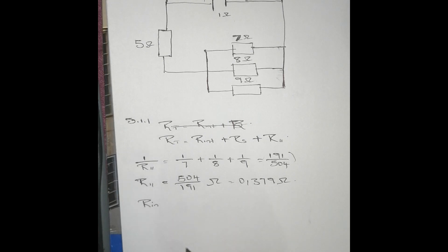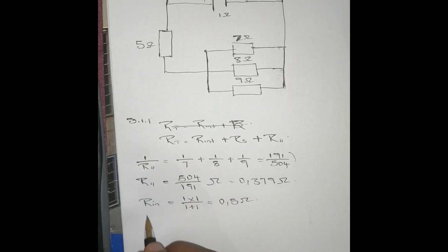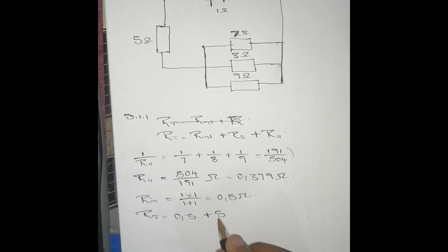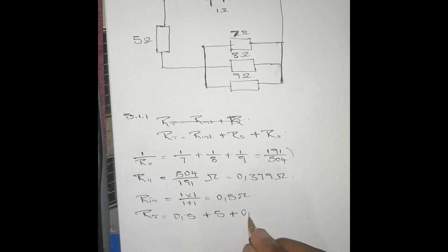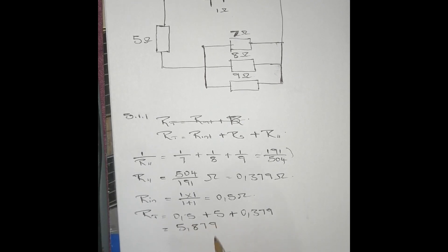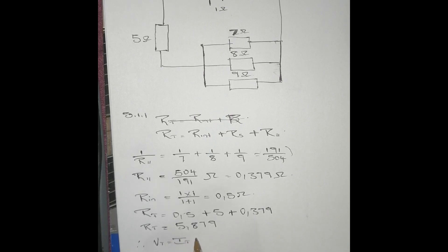R_internal: since the two cells are in parallel, we use the shortcut formula: (1 × 1)/(1 + 1) = 0.5 ohms. Therefore R_T = R_internal + R_series + R_parallel = 0.5 + 5 + 2.639. Punching that into the calculator gives us R_T = 8.139 ohms.